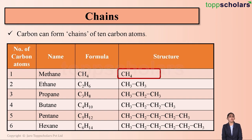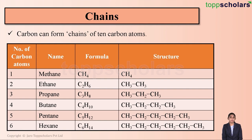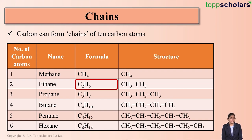Now let's move on to ethane. Ethane has two carbon atoms and its formula is C2H6. From the formula, it is very clear that in ethane we have two carbon atoms and six hydrogen atoms.